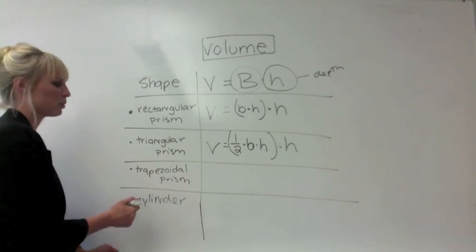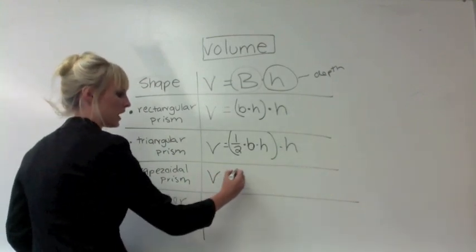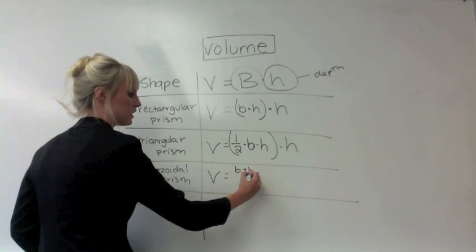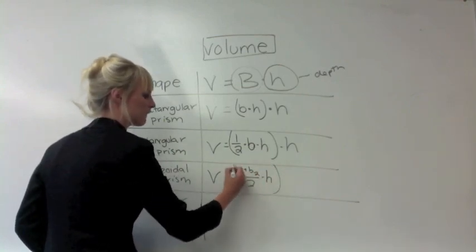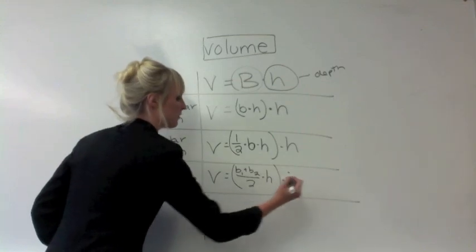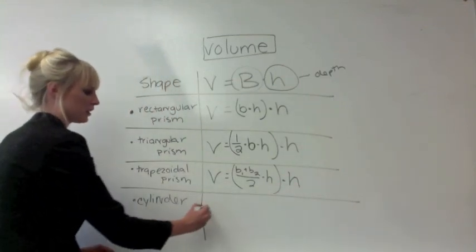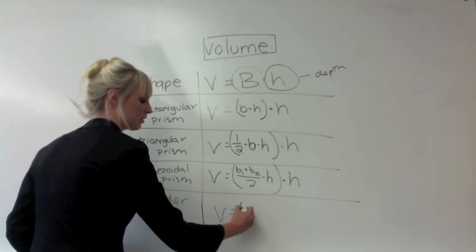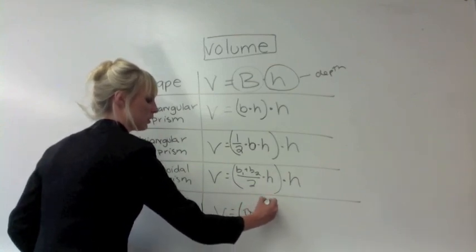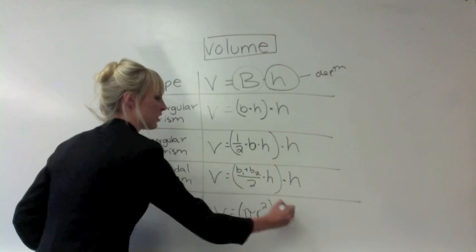For a trapezoidal prism, you multiply the area of the base - base one plus base two, divided by two times the height - by the depth of the figure. And for a cylinder, you multiply the area of the base, which is a circle, by the depth of the figure.